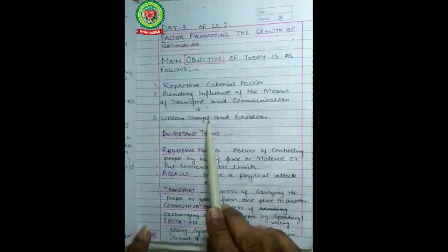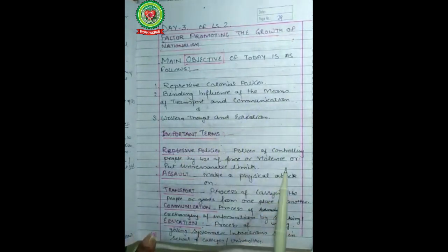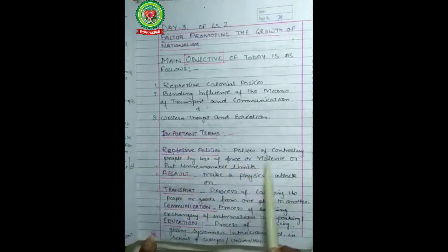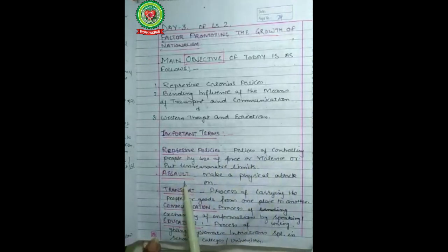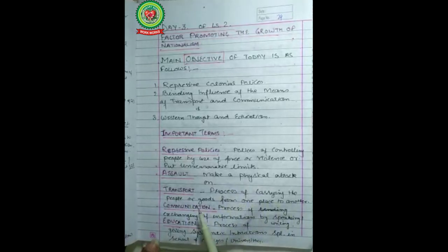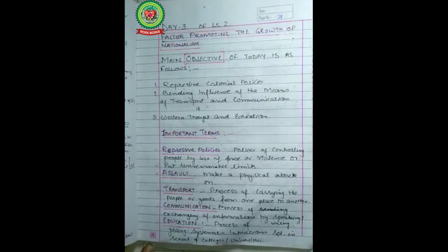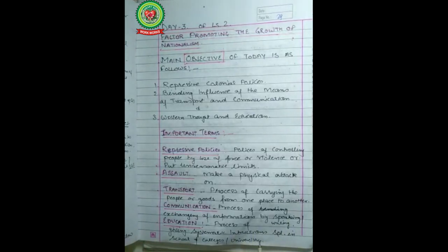Before starting the topic, we must know the following terms: repressive policies — policies of controlling people by use of force or violence; assault — making a physical attack on someone; transport — process of carrying people or goods from one place to another; communication — process of exchanging information by speaking or writing; education — process of giving systematic instruction, especially in schools, colleges, and universities.